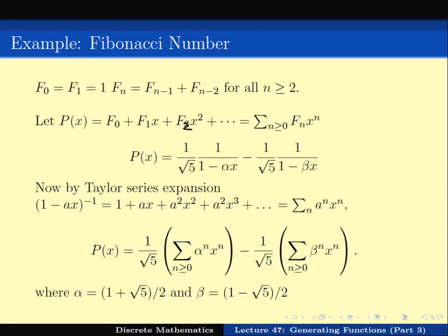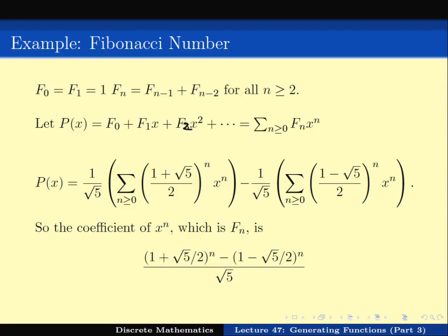From the partial fraction expansion, the coefficient of xⁿ in P(x) is (1/√5)·(αⁿ − βⁿ), which equals Fₙ. Substituting α = (1 + √5)/2 and β = (1 − √5)/2, we get the closed-form Binet's formula: Fₙ = [(1 + √5)/2]ⁿ − [(1 − √5)/2]ⁿ all divided by √5. Almost like magic, we have derived a compact closed form for the Fibonacci numbers — which is quite an impressive result.